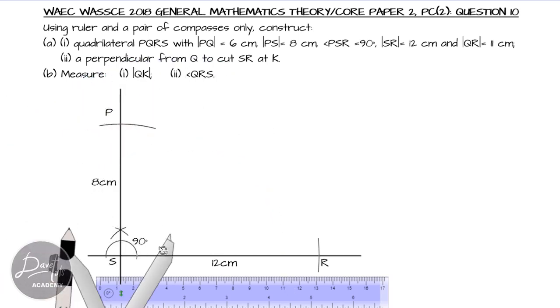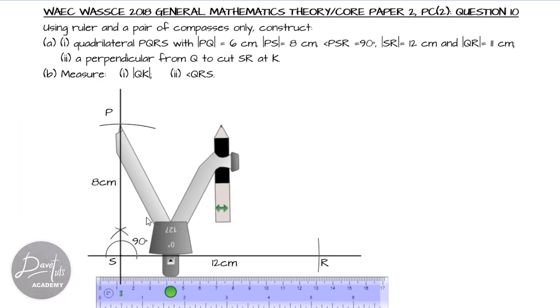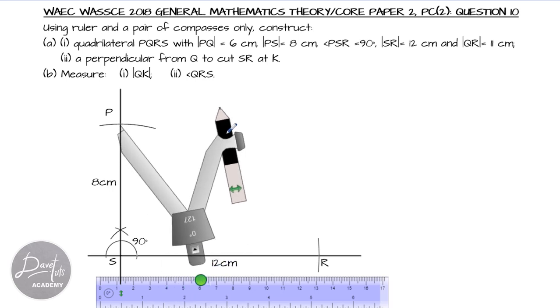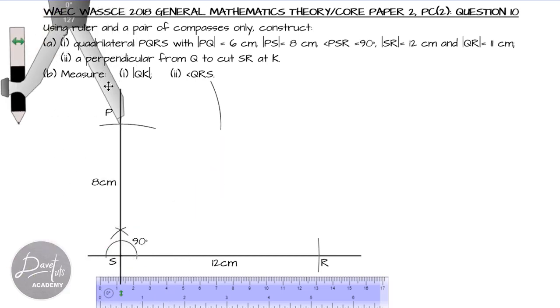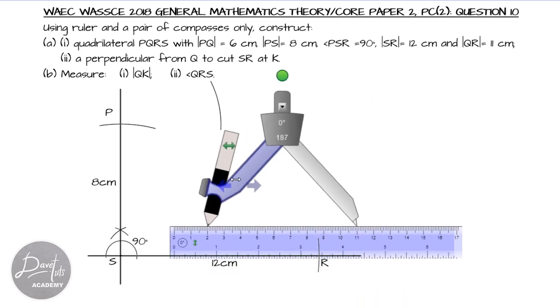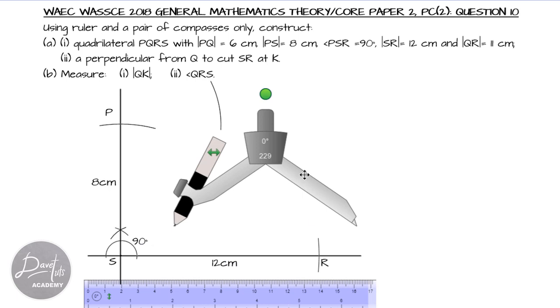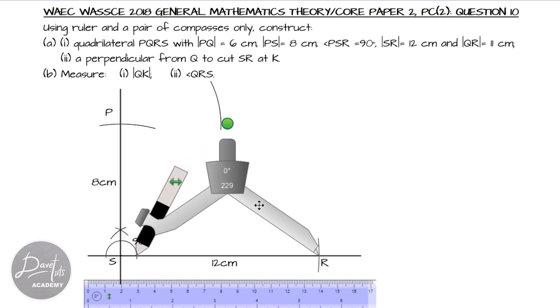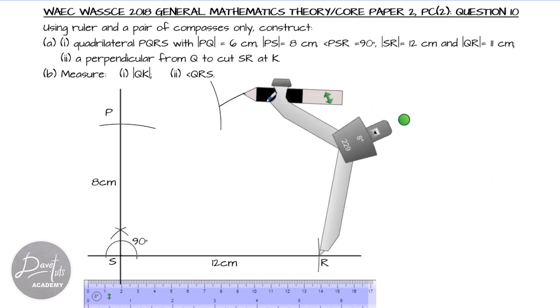So, we can go to our point P, and then to mark off Q, which is 6 cm, we can draw an arc. Draw an arc, and between P and R arc is a set of points that are 6 cm apart from P. Then, to get our QR, we can also go and measure from our ruler a length of 11 cm. And with that 11 cm, we can go to point R, which we have defined already, and then try and mark off an arc that will cut the initial arc that we just drew.